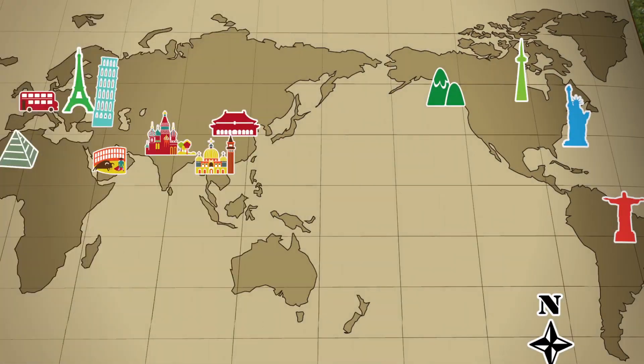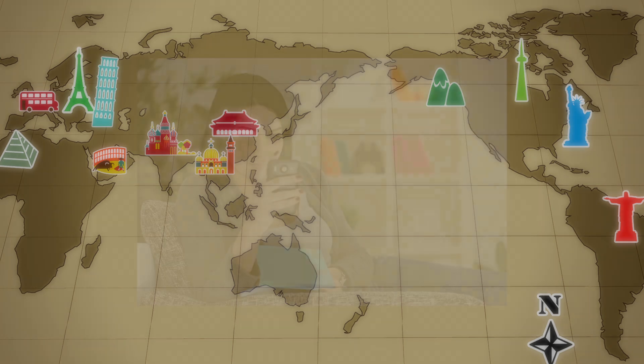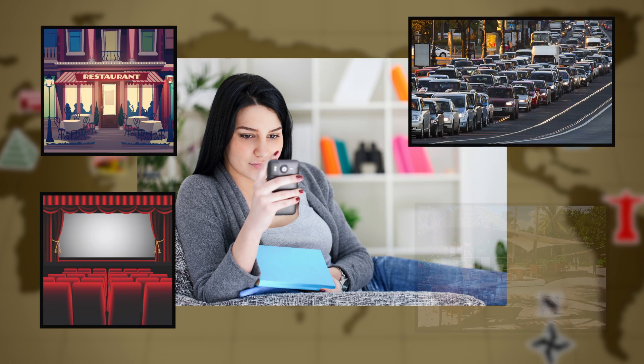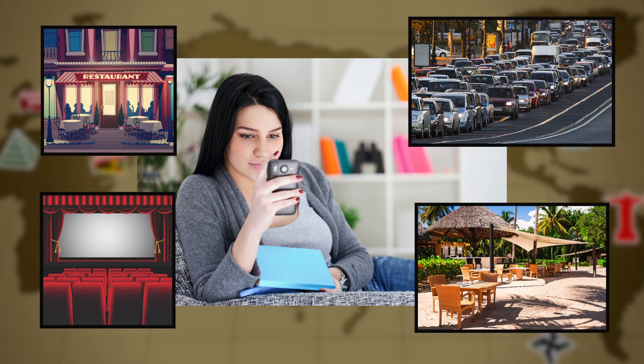This powerful mapping tool is used by governments and private companies all over the world to make and analyze maps. Have you ever used a phone app to find a nearby restaurant or movie theater? How about looking up the traffic or weather where you're headed? That's GIS.